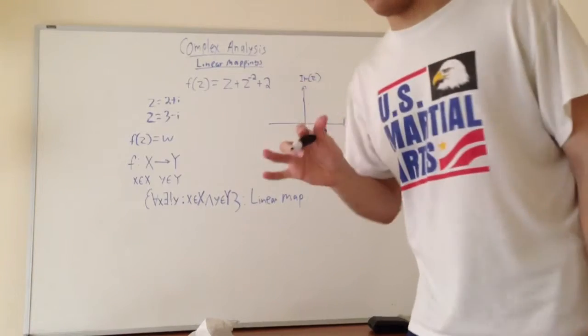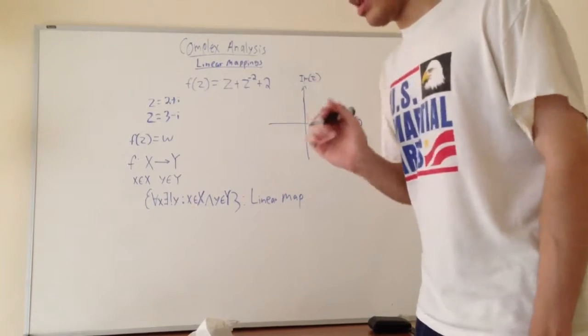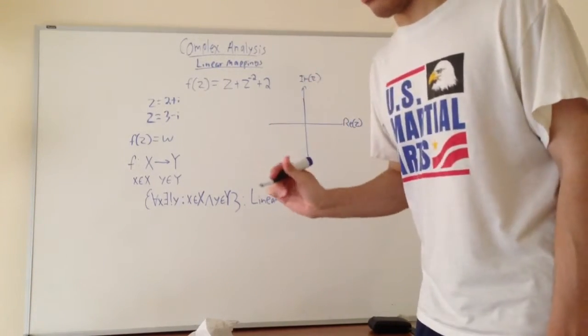So all we're really doing is taking one element in the domain and mapping it to one element in the co-domain.